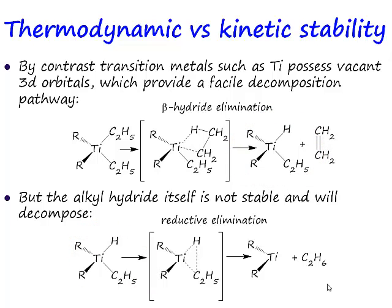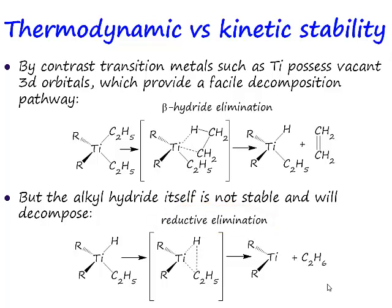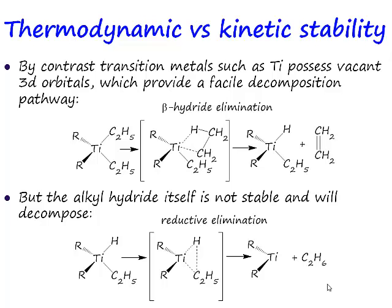What happens is the hydride and the alkyl clip together in a process known as reductive elimination. If reductive elimination occurs, the hydride and the alkyl clip together to make an alkane. Why is this process called reductive elimination? What's the oxidation state of titanium in this complex? It's titanium in oxidation state 4. What's the oxidation state of titanium in this complex? 2. So this has gone from titanium(IV) to titanium(II) — from 4-coordinate to 2-coordinate — and we call that process reductive elimination.